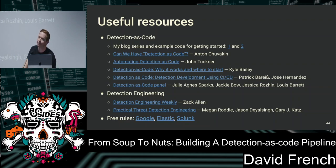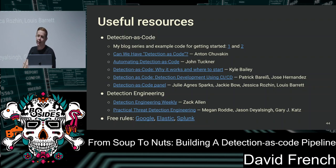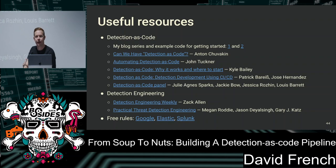I haven't heard of anyone using ServiceNow to store their detection content. What you could do is have a job that periodically lists all detection objects in ServiceNow, parses those into objects your SIEM understands, and pushes them out. There might be a last-modified or last-updated field you could key off to detect if something's changed.